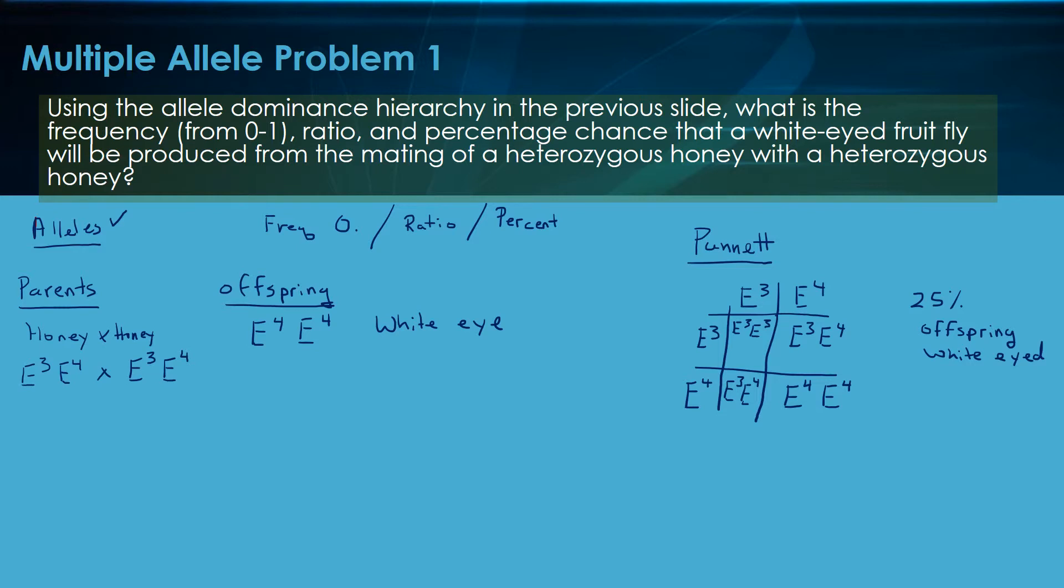Let's come down here. We're going to do our answer. Our answer not only wants to know the percentage, it wants to know the ratio. We'll start with what we've got right here. 25% offspring white-eyed. Percentage and frequency are basically the same thing.